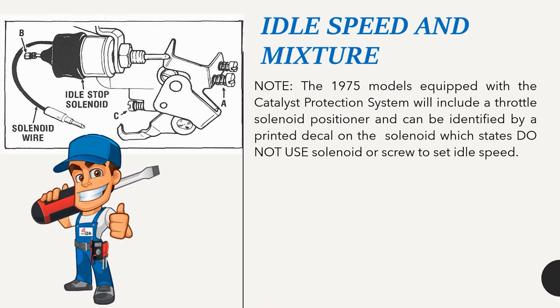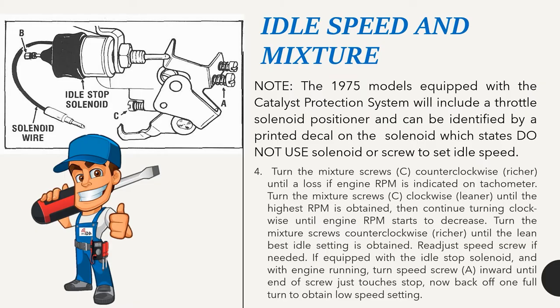Note: 1975 models equipped with the catalyst protection system include a throttle solenoid positioner identified by a decal stating 'do not use solenoid or screw to set idle speed.' Turn mixture screws C counter-clockwise (richer) until a loss in engine RPM is indicated on the tachometer. Turn mixture screws clockwise (leaner) until the highest RPM is obtained, then continue turning clockwise until engine RPM starts to decrease. Turn mixture screws counter-clockwise (richer) until the lean best idle setting is obtained. Readjust speed screw if needed. If equipped with idle stop solenoid, turn speed screw A inward until it just touches stop, then back off one full turn for low speed setting.